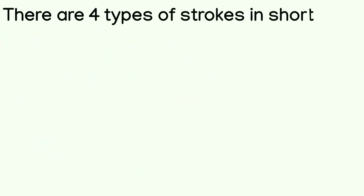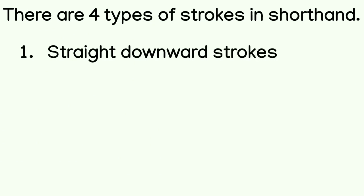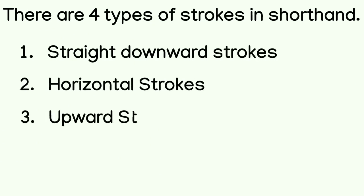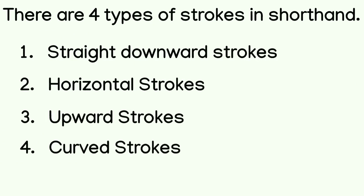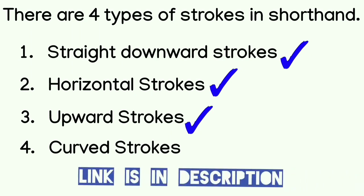We make 4 types of strokes in shorthand: straight downward strokes, horizontal strokes, upward strokes, and curved strokes. We have already covered straight downward strokes, horizontal strokes, and upward strokes. If you haven't seen these 3 videos, there is a link in the description box. I request that you watch those 3 types of strokes before this video so that you will be clear after today's video.